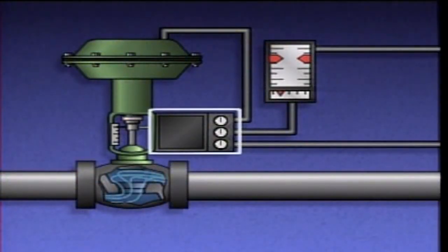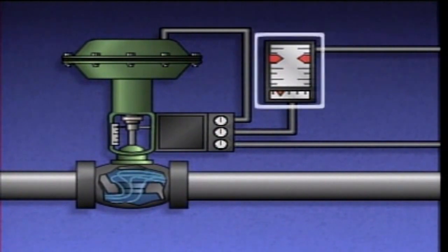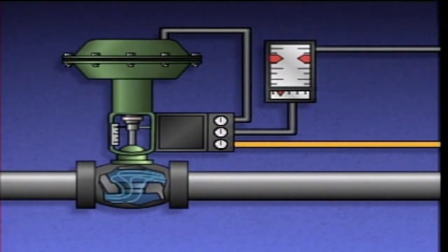When a positioner is used with an actuator, the signal from the controller goes to the positioner instead of directly to the actuator. The positioner controls a source of air that enters here and is sent to the actuator through this line.